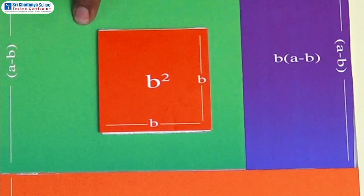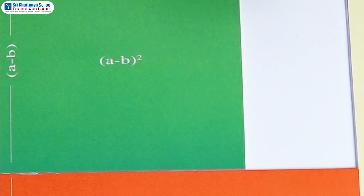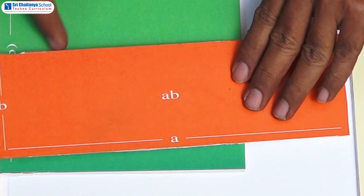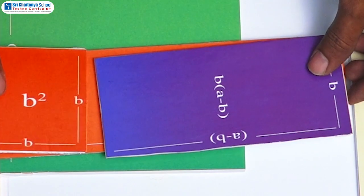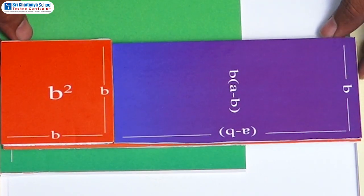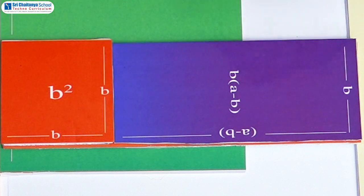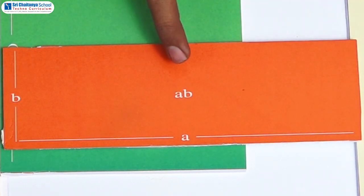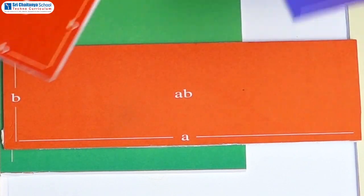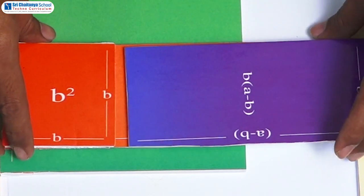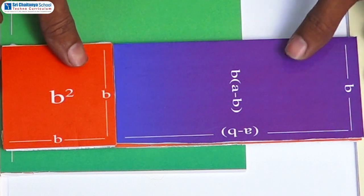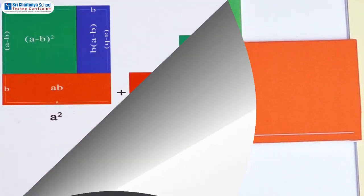Now, let us take these two parts and place them exactly on this rectangle. See children, all these three parts are exactly coinciding. Already we know the area of this rectangle is AB square units, and after placing these two parts, the sum of the areas of these two parts is also AB square units.